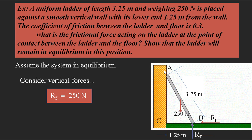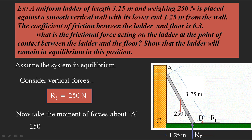To find the friction between the floor and the ladder, we take moments about point A. For equilibrium, the sum of moments about A equals zero, meaning clockwise moments equal anti-clockwise moments. The weight 250 N causes clockwise rotation; its perpendicular distance from A is half of 1.25 meters, since the weight acts at the midpoint. So the moment of the weight is 250 × (1.25/2).